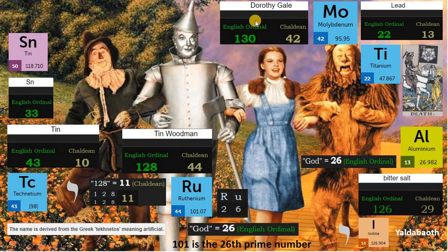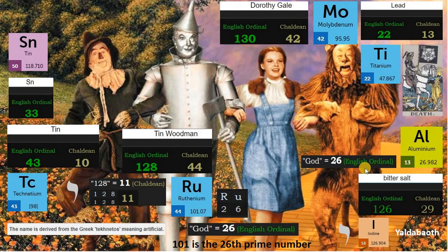Dorothy Gale is 130 in English ordinal, and it is 13, like the Death tarot card. We have 42 in Chaldean, and its element is molybdenum, meaning lead. Lead is 22 in English ordinal, matching element titanium, and 13 in Chaldean is like the Death tarot card. And we have element aluminium. The atomic mass of aluminium is 26, matching God's number in English ordinal. Aluminium is derived from the word aluminum, meaning bitter salt. Bitter salt is 126 in English ordinal, matching element iodine — the yod. And we have 29 in Chaldean, like Yaldabaoth.